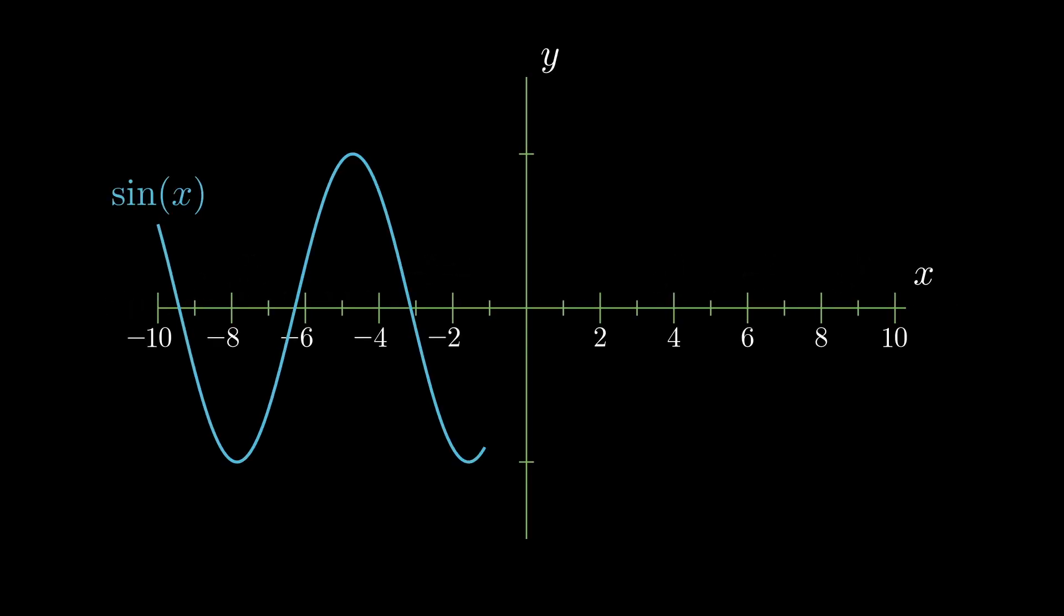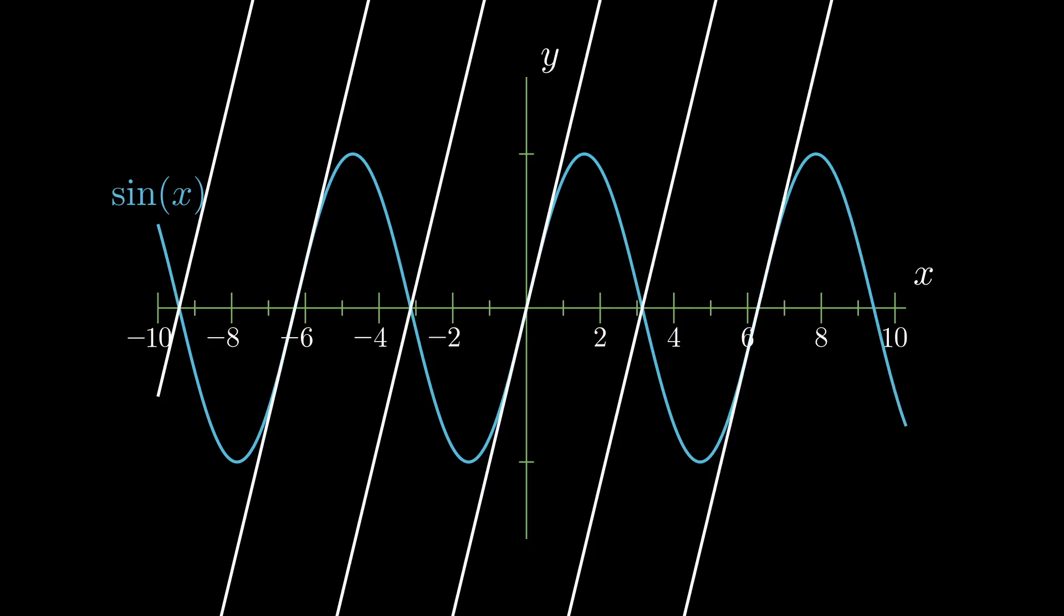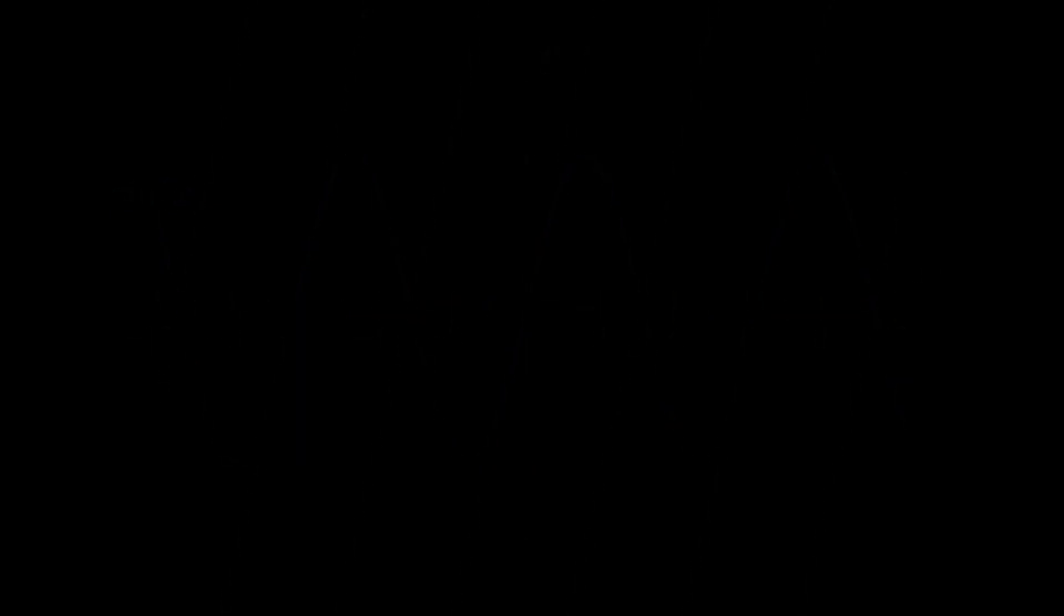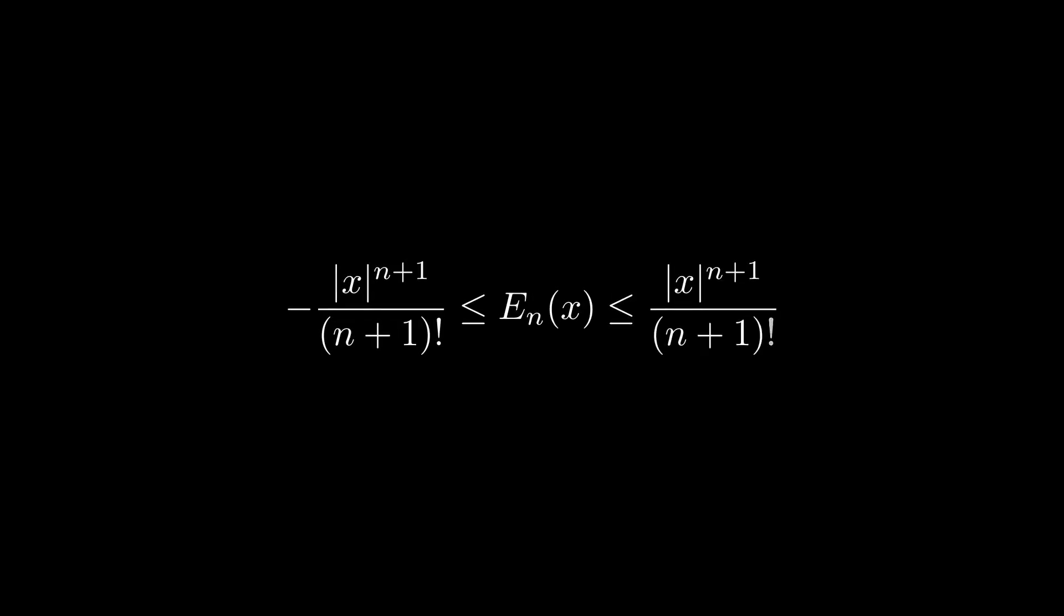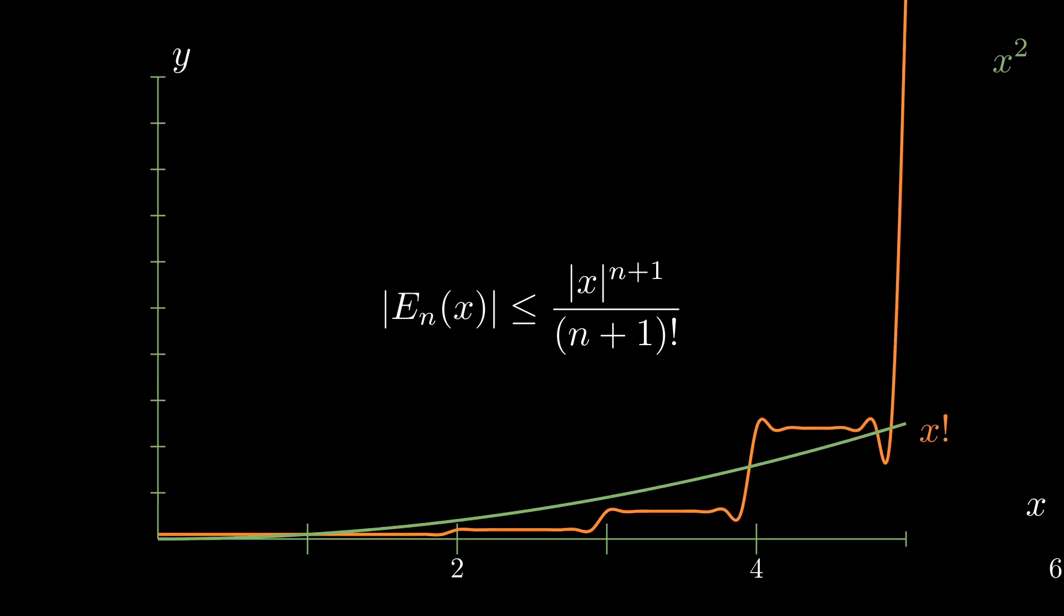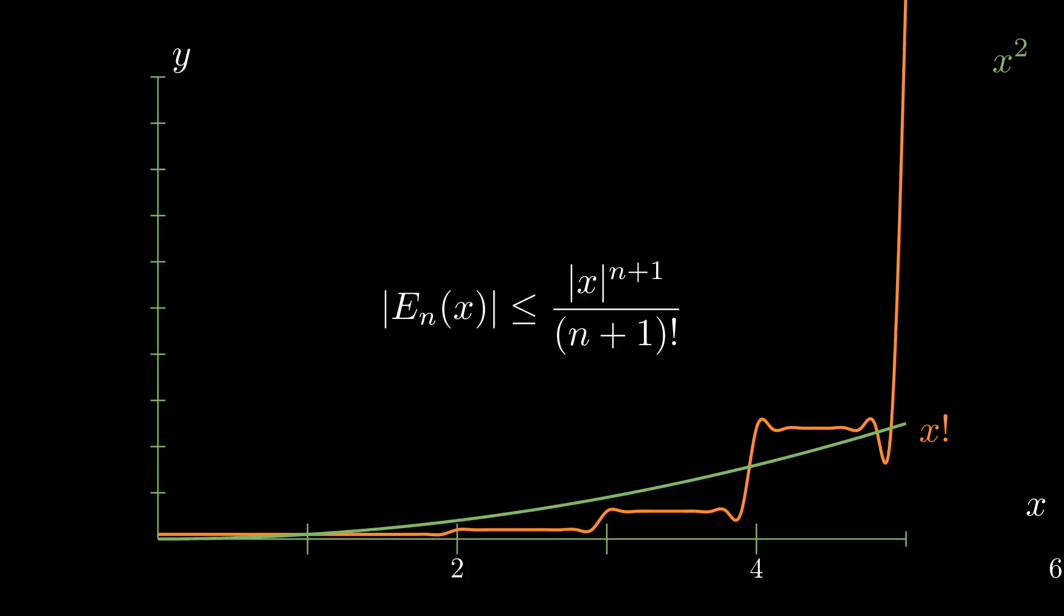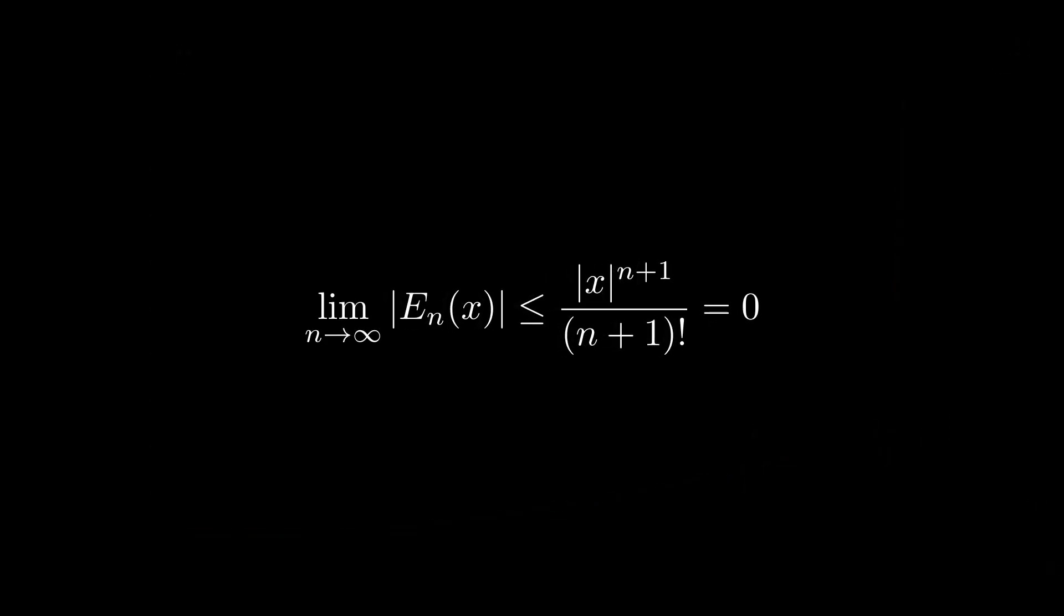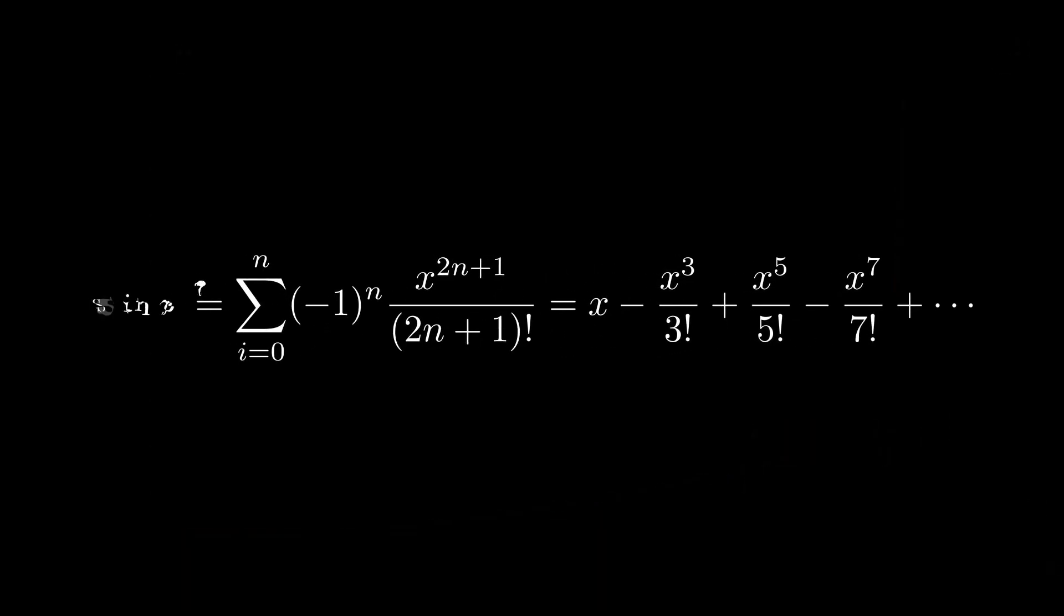Note that the maximum derivative of sine of x occurs every integer multiple of pi when it crosses the x-axis with slope of 1. Thus, by the Lagrange error formula, we have M equals 1 and the error function bounded by this expression. Because this fraction has a factorial in the denominator, which grows much faster than the polynomial in the numerator, in the limit as n goes to infinity it will equal zero, showing that sine of x is equal to that expression.